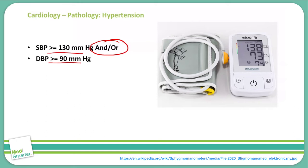It doesn't have to be both. You can have a blood pressure of 135 over 85 and that is diagnostic of hypertension. You can also have a blood pressure of 120 over 95 and that is also diagnostic of hypertension. These can be mutually exclusive.